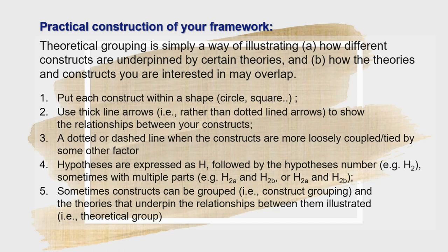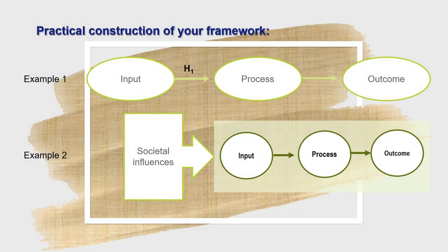For example, we can see here the use of shapes and arrows. In example one, we have a simple structural design of input-process-outcome, with the input having a hypothesis towards the process. In example two, we have the systems theory from example one, and now we are juxtaposing it with societal influences, represented with a rectangle shape and arrow.